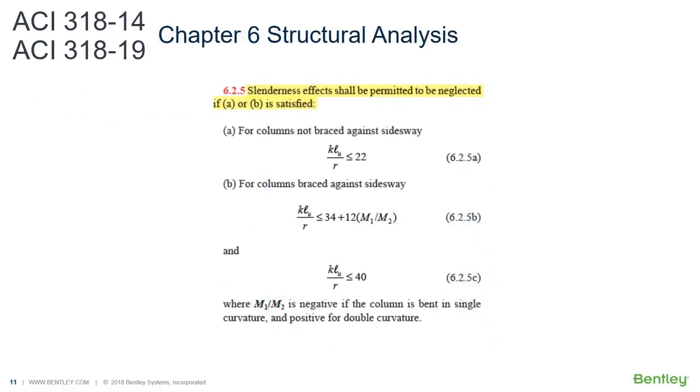Referring again to section 6.2.5, ACI 318 uses the term slenderness effects when generally referring to stability effects. If these effects are not permitted to be neglected, according to this section, what methods are available to consider them, and how are they to be done?